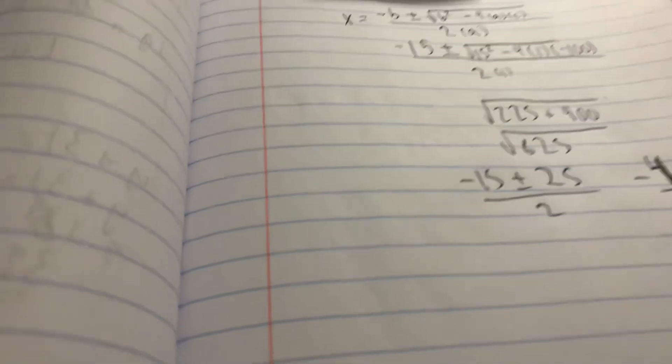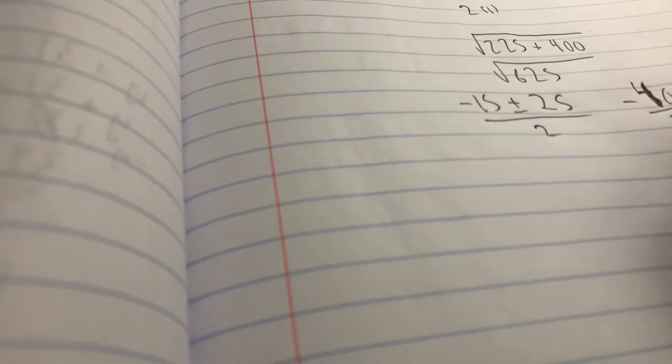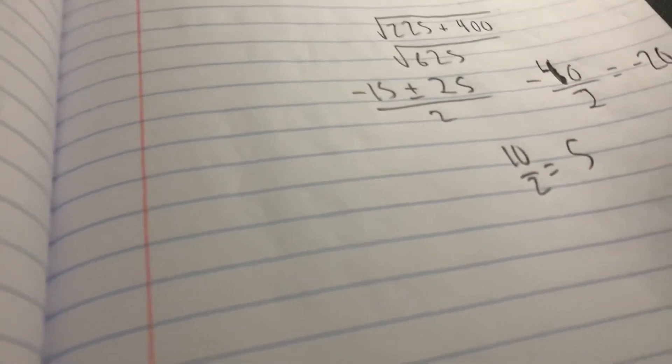That cannot be a solution for logarithms. And then the other answer would be positive 10, I believe. 15, yeah. It should be 10 divided by 2, so that would be 5. So the answer should be 5.